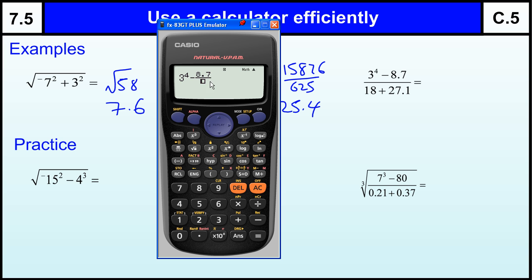Now if I press the fraction button there, you see it's only putting the second bit under the fraction. So that doesn't work. So what we need to do is we need to get the fraction bucket in first. Put the 3 to the power of 4. Come out of the power minus 8.7. Then go to the bottom of the fraction. 18 plus 27.1 equals.